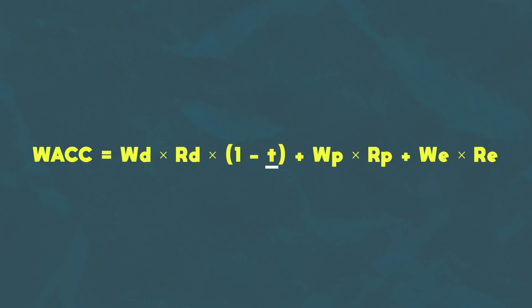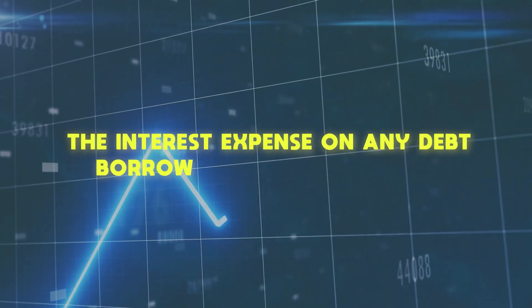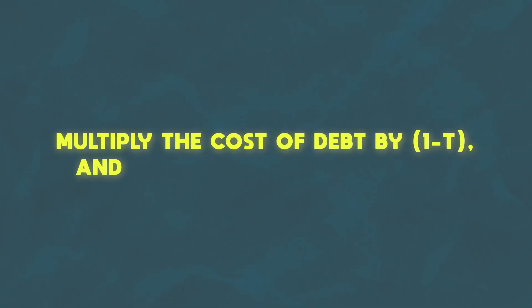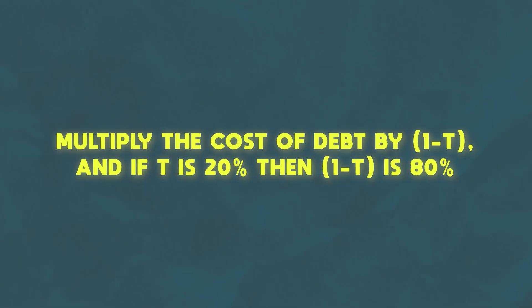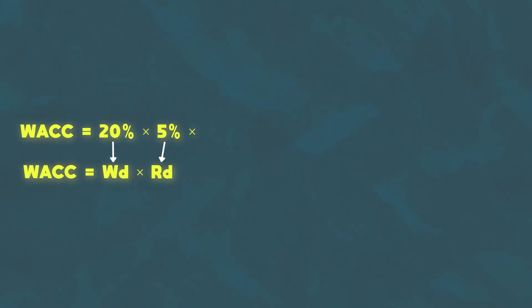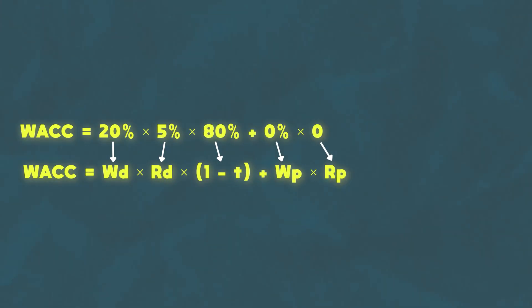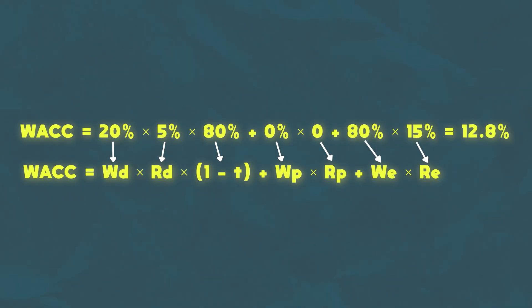The last missing piece is T — the company's tax rate. This is because the interest expense on any debt borrowed is tax deductible. So if the tax rate is 20%, even though the cost of debt is 5%, we get 20% of that 5% reimbursed because we pay less taxes. That's why we multiply the cost of debt by (one minus the tax rate) — so one minus 20% equals 80%. Putting it all together, the WACC is: 20% × 5% × 80% + 0% × 0 + 80% × 15%, which equals 12.8%. On a weighted average basis, the company's investors expect a 12.8% return, so all future cash flows must be discounted back by 12.8% to find what the company is worth today.